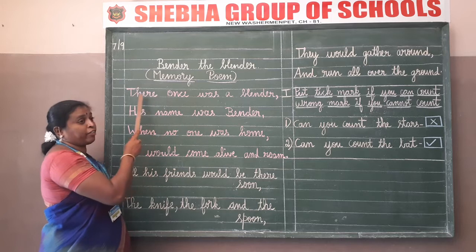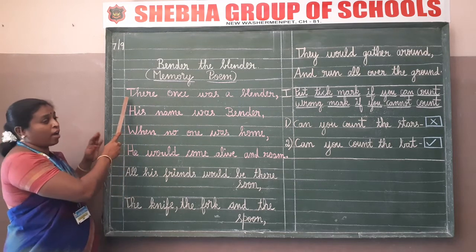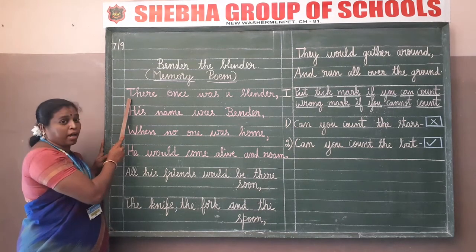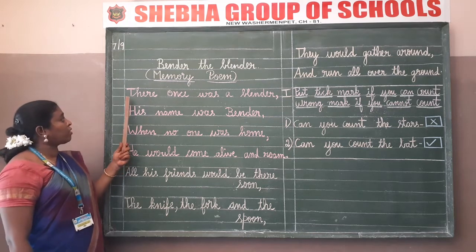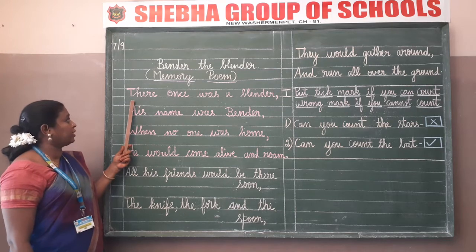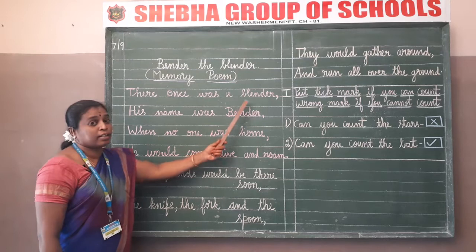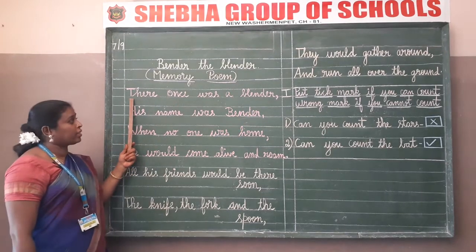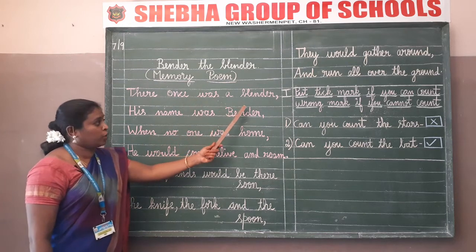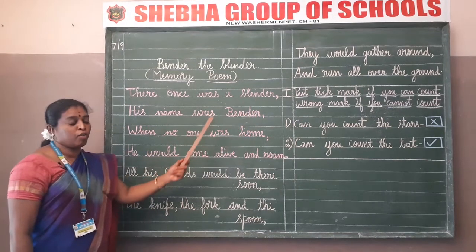Now leave the next line and start writing from the next line. Start writing from the margin, start writing the word with the capital letter: 'There once was a blender'. See how I have written - with finger space between each word. End the sentence with a comma.